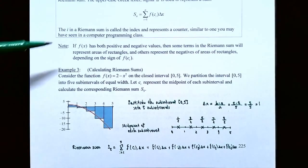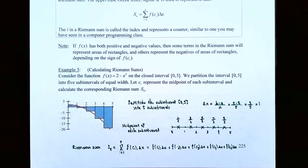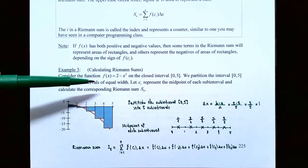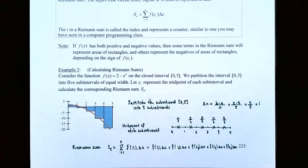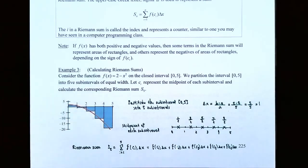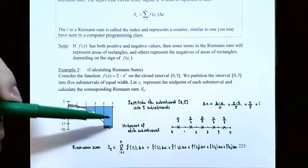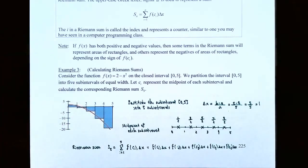Example 3 — calculating Riemann sums. Consider f of x equals 2 minus x squared on the closed interval 0 to 5. We partition the interval into 5 subintervals of equal width. Let c sub i represent the midpoint of each subinterval and calculate the Riemann sum S sub 5. Looking at the graph: it's a parabola, and we want to find the area bounded by the graph and the x-axis between x equals 0 and x equals 5. Some rectangles will be above the x-axis (positive) and some below (negative), depending on the sign of the y-values.